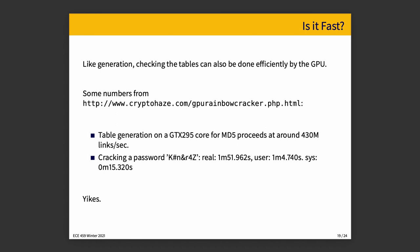Here are some numbers from cryptohaze.com using a GPU rainbow cracker. Table generation on a GTX 295 GPU — not exactly the latest and greatest, but still an acceptable one — for MD5, which admittedly is not a cryptographic hash but is a hash function that people sometimes use, proceeds at about 430 million links per second. Cracking a password that seems like it complies with all the random password rules — mixture of lowercase and uppercase letters, some numbers, some symbols, not too short — can be cracked in under two minutes. Yikes.